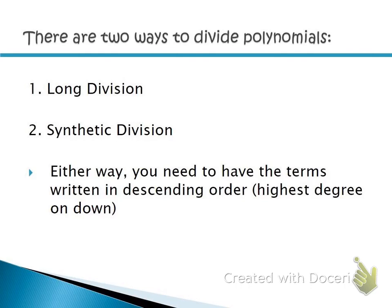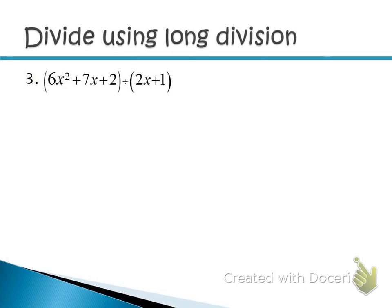Whether we do long division or synthetic division, you're going to have to have the terms written in descending order — highest degree on down. So a quick reminder on polynomials: polynomials are expressions that could have one or more terms. They're algebraic expressions and they can be different degrees. Degrees of polynomials are determined by the highest exponent you see. The first polynomial here is a degree 2, so we call it a quadratic.